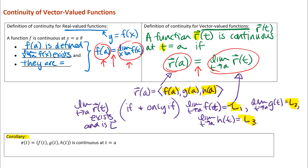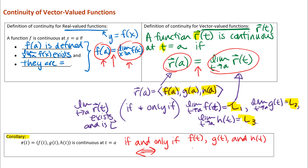This corollary tells us how to check if a vector-valued function is continuous at t equals a. It's an if-and-only-if — a double implication — meaning r of t is continuous at t equals a if and only if the three component functions f(t), g(t), and h(t) are all continuous at that same value t equals a. So we can use our knowledge of ordinary real-valued functions to answer questions about continuity of vector-valued functions.